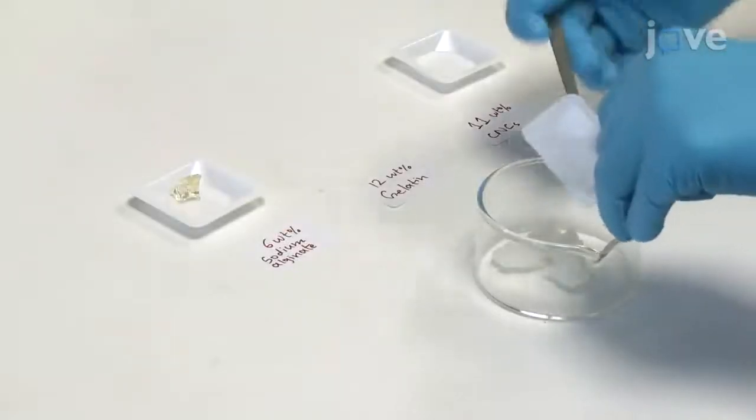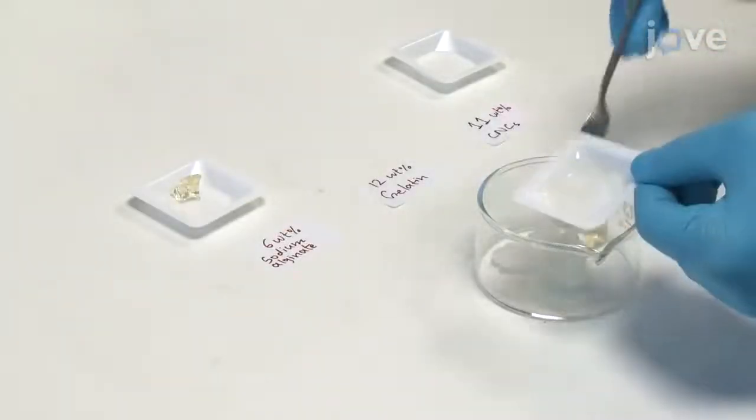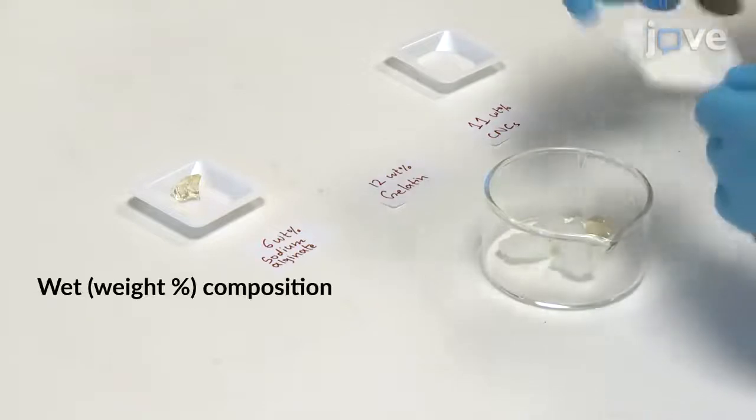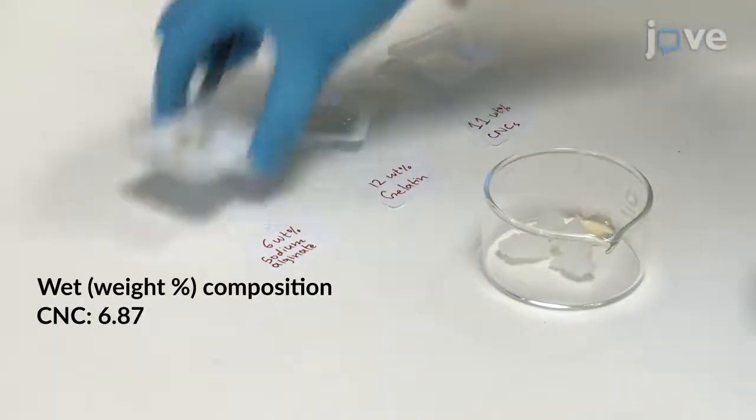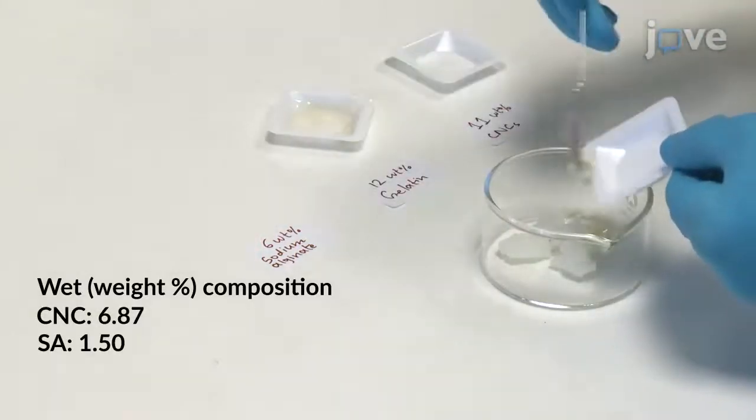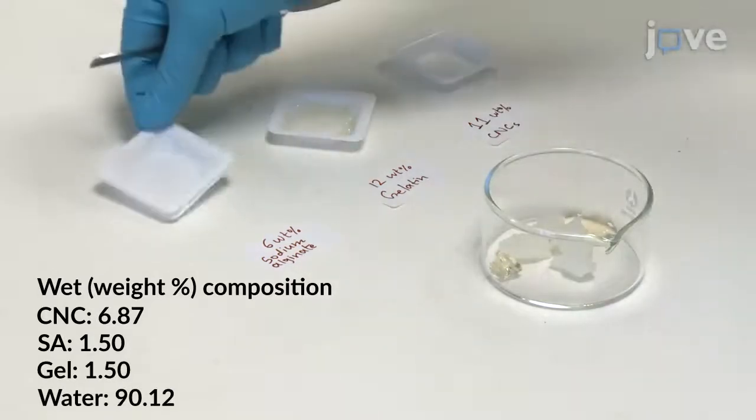To begin, prepare 40 mL of hydrogel ink by mixing 11% by weight CNC, 6% by weight sodium alginate, and 12% by weight gelatin in a container.